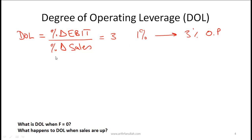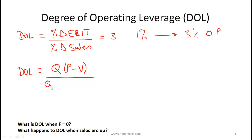Companies that take on more fixed cost tend to have higher degrees of operating leverage. The other formula you need to know: degree of operating leverage equals Q times (P minus V) divided by Q times (P minus V) minus the fixed costs. Here Q is quantity sold, P is price, and V is variable cost — so P minus V is the contribution. The fixed costs are operating fixed costs such as setting up the factory, and do not include finance costs.